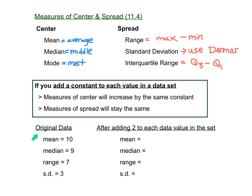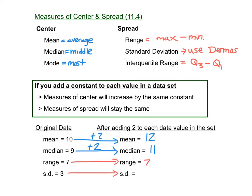Here's an example. Suppose we have a dataset with a mean of 10, a median of 9, a range of 7, and a standard deviation of 3. If we add 2 to each of the data values in this set, the mean and the median would both increase by that same constant. Since we're adding 2, the mean and the median — which are both measures of center — would also go up by 2. So 10 plus 2 makes the new mean 12, and 9 plus 2 makes the new median 11. The range and standard deviation, though, are measures of spread and would stay the same, so our range would stay at 7 and our standard deviation would stay at 3.